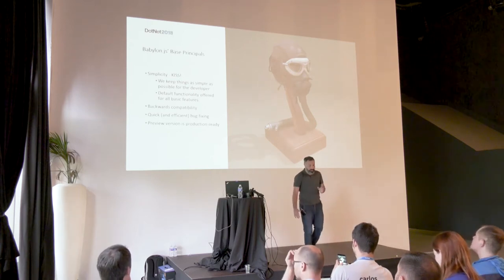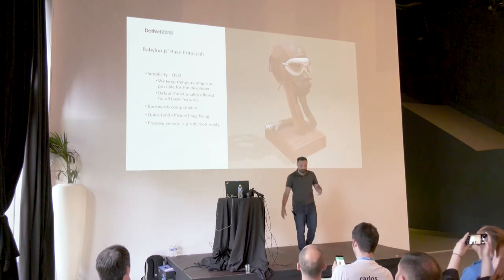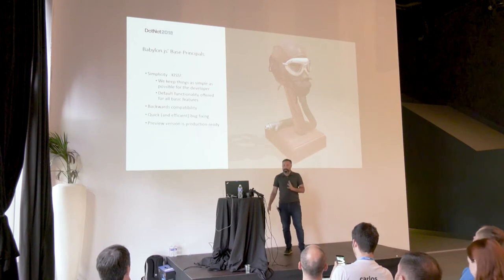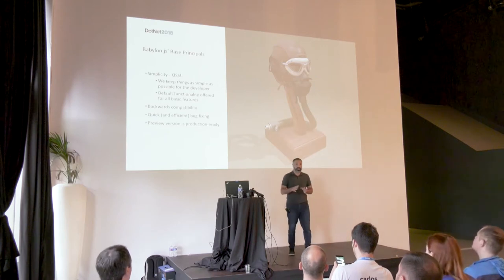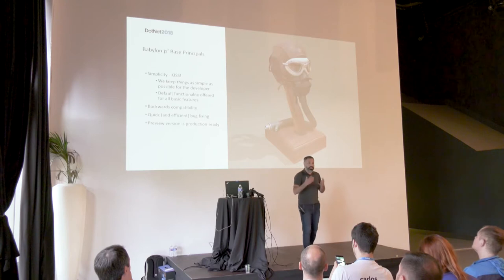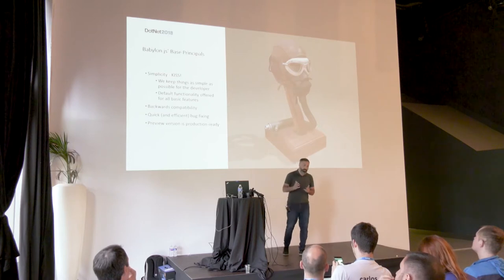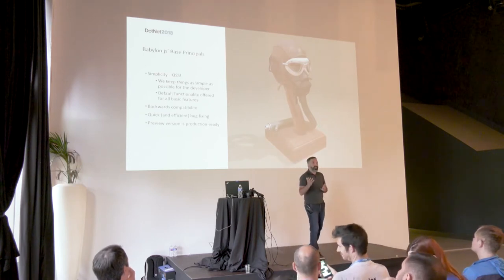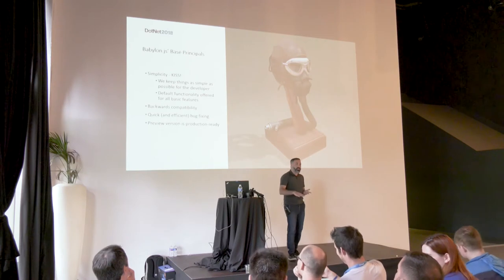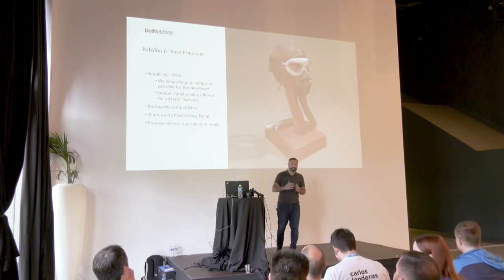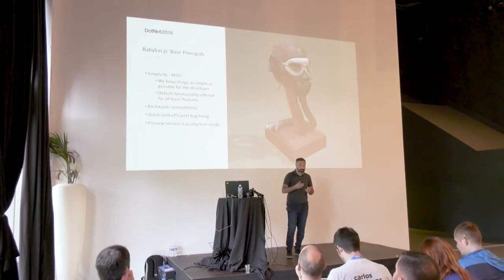The first and most important principle we have is KISS — Keep It Simple. We try to keep things as simple as possible for the developer, so the developer wouldn't have to learn a new framework. They will just jump in and start coding in a very intuitive way. We offer default functionalities for basic features such as creating a camera, a light, or an environment like the ground or the sky — all with a single line of code. But it still lets you configure that if you want to change the experience a bit.